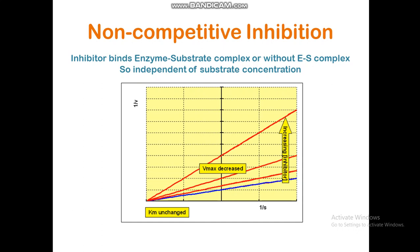Substrate concentration is not involved in the inhibition, so it is not competitive or uncompetitive inhibition, where substrate concentration must be required for inhibition of the enzyme. In non-competitive inhibition, Vmax decreases as inhibitor concentration increases, while Km remains unchanged.